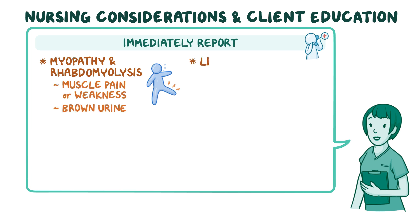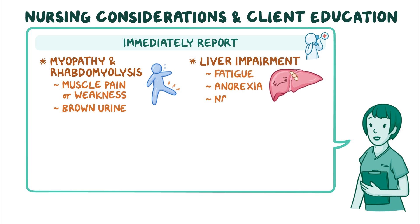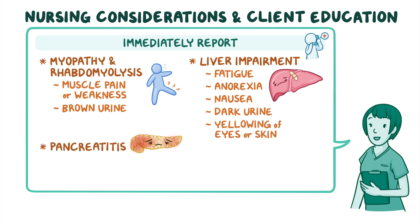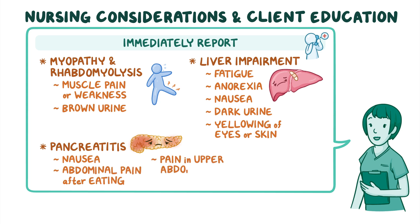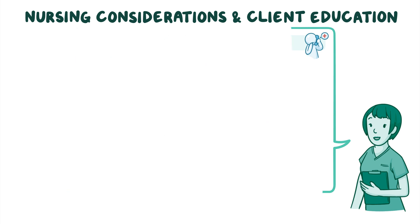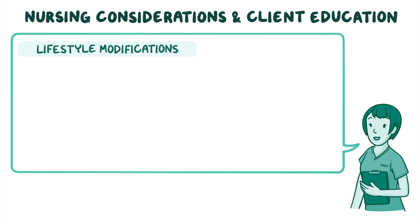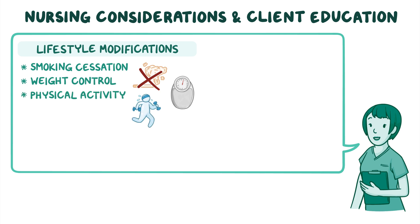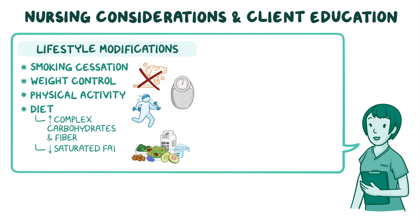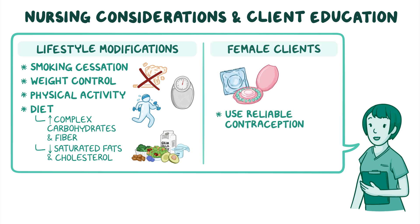Clients should also report symptoms of liver impairment such as fatigue, anorexia, nausea, dark urine, or yellowing of the eyes or skin, and symptoms of pancreatitis that could manifest as nausea, abdominal pain after eating, or pain in the upper abdomen that can radiate to the back. Review lifestyle modifications that can reduce cardiovascular risk, including smoking cessation, weight control, physical activity as tolerated, and a diet high in complex carbohydrates and fiber and low in saturated fats and cholesterol. Caution clients assigned female at birth to use reliable contraception during treatment and notify their healthcare provider immediately if they become pregnant.